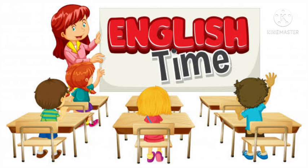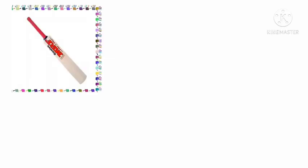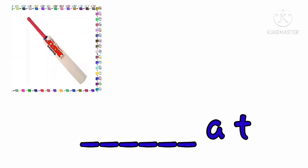Today we will practice AT words — that means the words will come from the AT family. You have already learned AT family words. Now see the picture; the picture is known to you, you can identify it. Here you have a dash followed by A-T. What will come on the dash? See the picture and think.